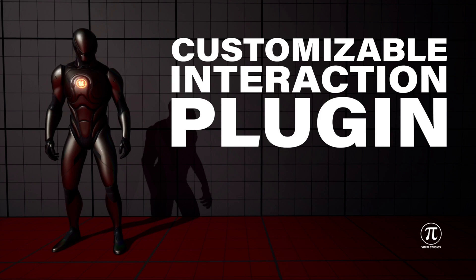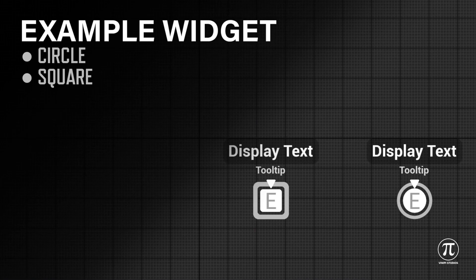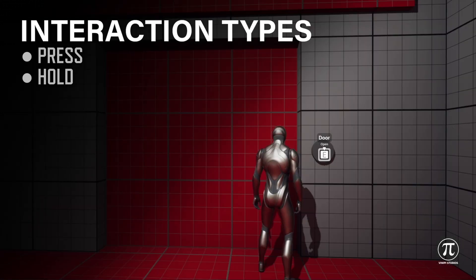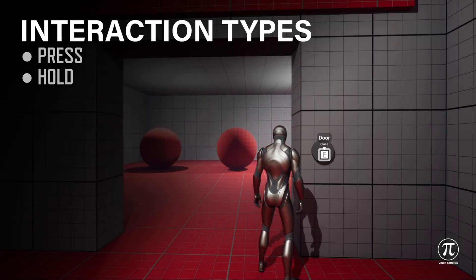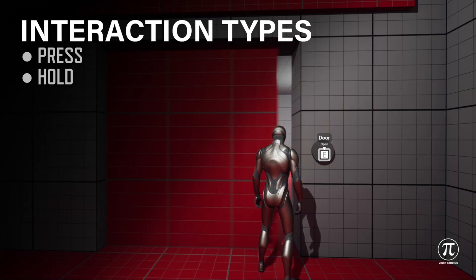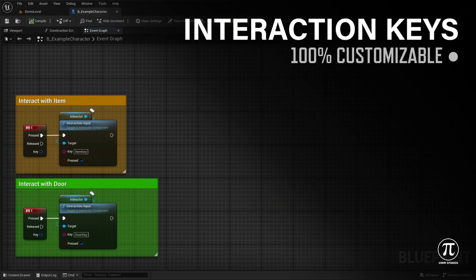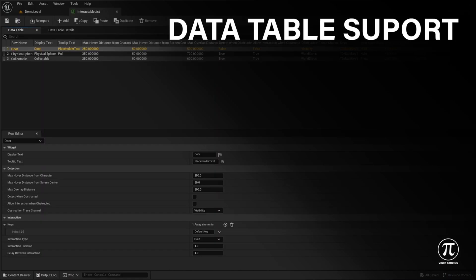Finally, there's the Customizable Interaction Plugin. This plugin lets you integrate an interaction system into your own game with ease. It includes various customizable interaction and detection models, and supports physics simulated objects. It was made in C++ for optimization and advanced logic.